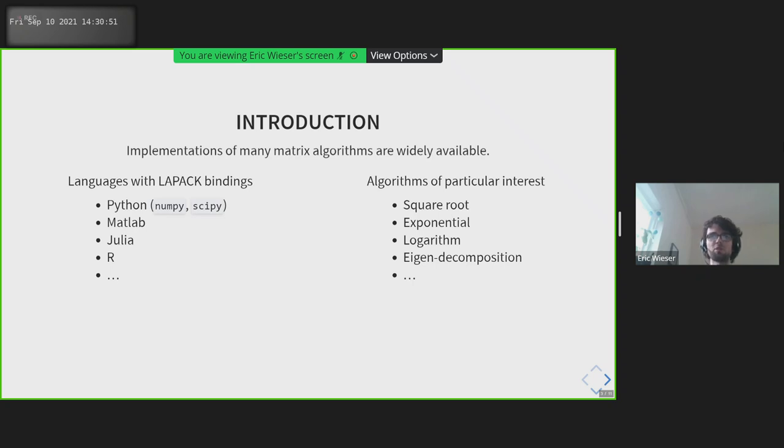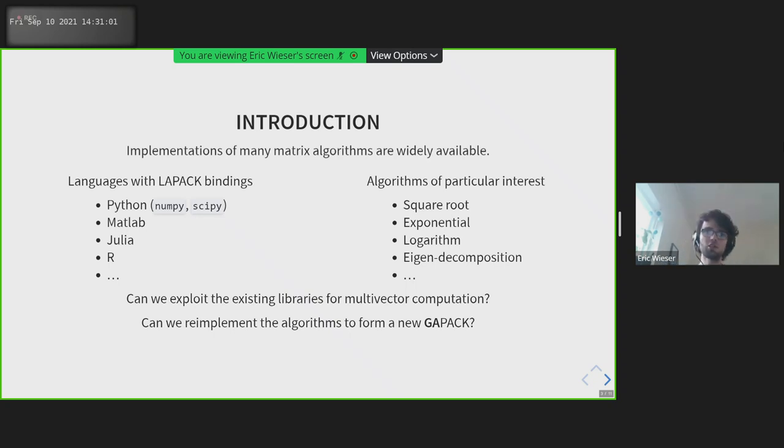So there are two different ways we could go here. We could either use the existing libraries and their implementations for multivector computation by sending our multivectors to a matrix and back, or we take the implementation itself and we change it to work better for multivectors. And maybe one day there'll be a GAPACK to go with the LAPACK.